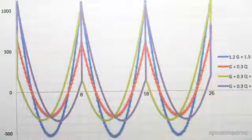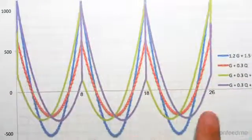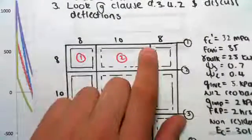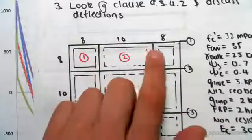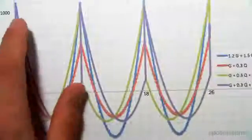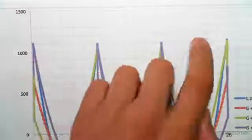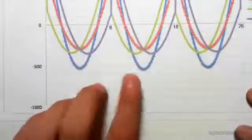You can see at 8, 18, and 26 - those are the points along our beam at different grid lines. At all the supports we have hogging moments, and at the mid span we have the maximum sagging moments.